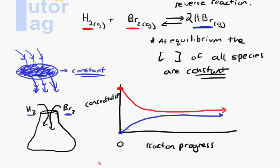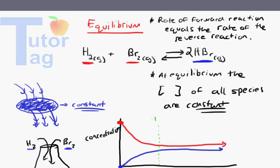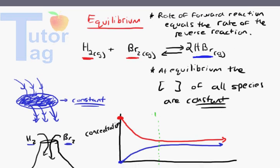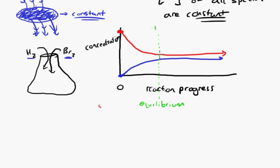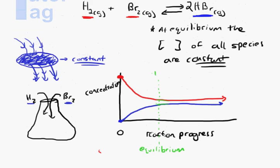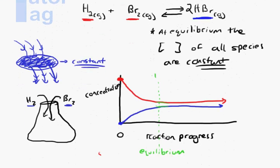We don't know exactly how far the lines go up or down — this is just an example — but they reach a constant level. When that constant level is reached, we call that a state of equilibrium. At that state, the forward reaction rate equals the reverse reaction rate, and the concentration of all species is constant. Notice that the lines are straight at equilibrium, meaning concentrations are constant.